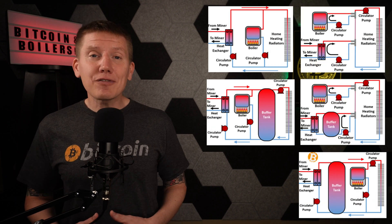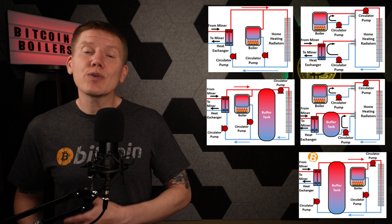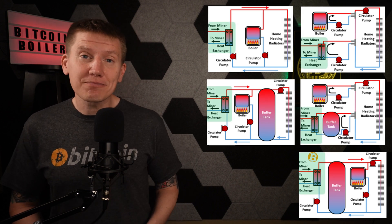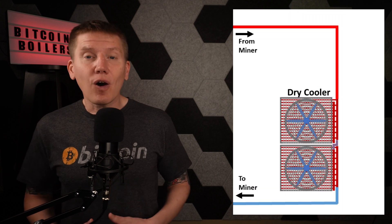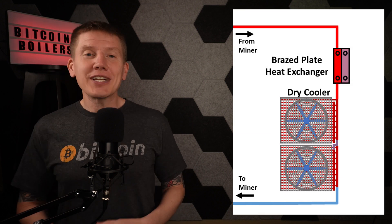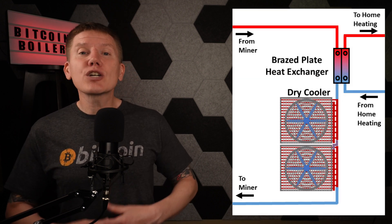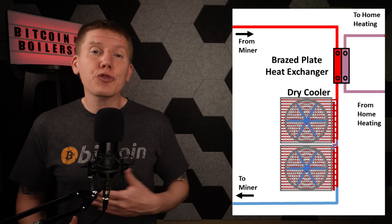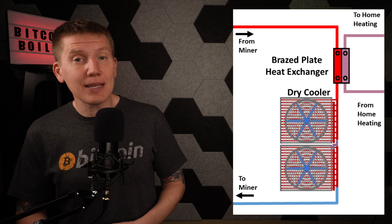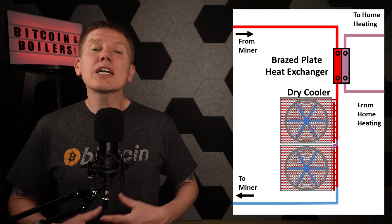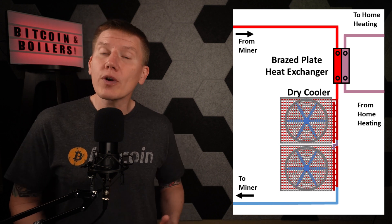This is where hydronic heating setups make things really easy. In every one of these configurations, heat is transferred between the Bitcoin cooling loop and the home heating loop using a brazed plate heat exchanger. On the miner cooling loop side, all that is needed is to place this brazed plate heat exchanger before the dry cooler. When heat is needed by the home heating system, the heat exchanger will pull heat from the Bitcoin miner loop. When heat is not needed, the fluid will pass through the heat exchanger staying at the same temperature. Either way, the Bitcoin cooling fluid will continue to the dry cooler and be completely cooled down before it returns to the miners.